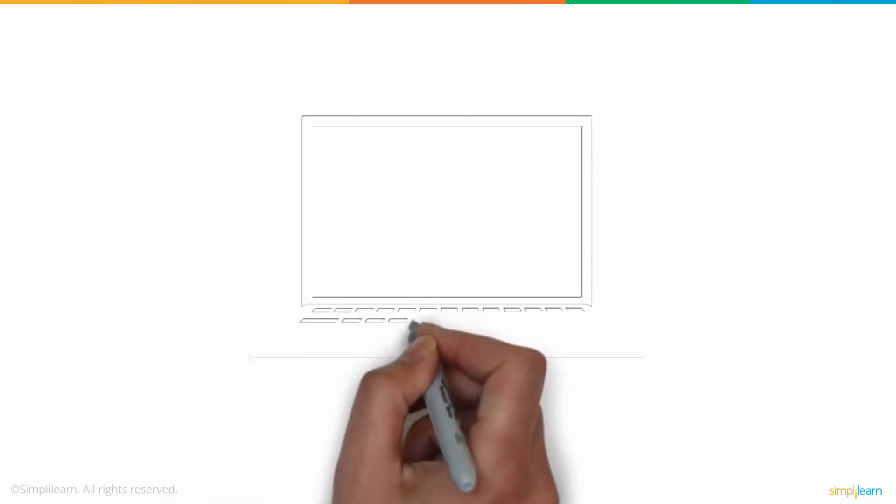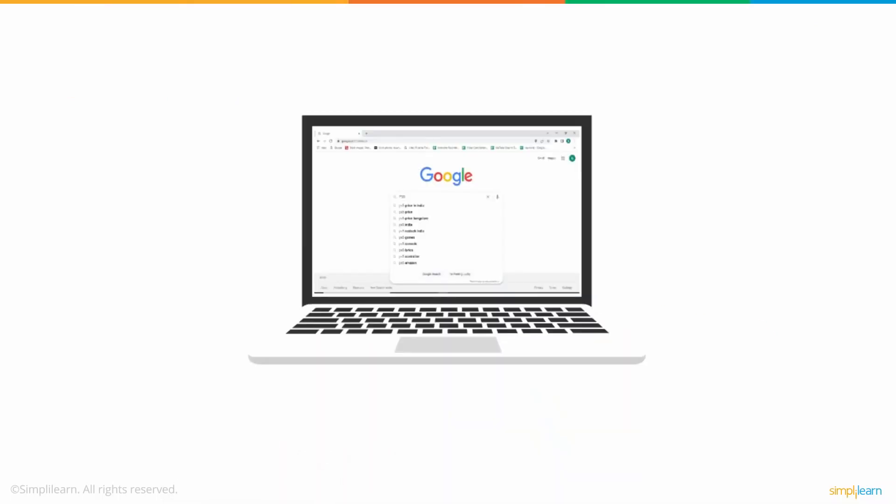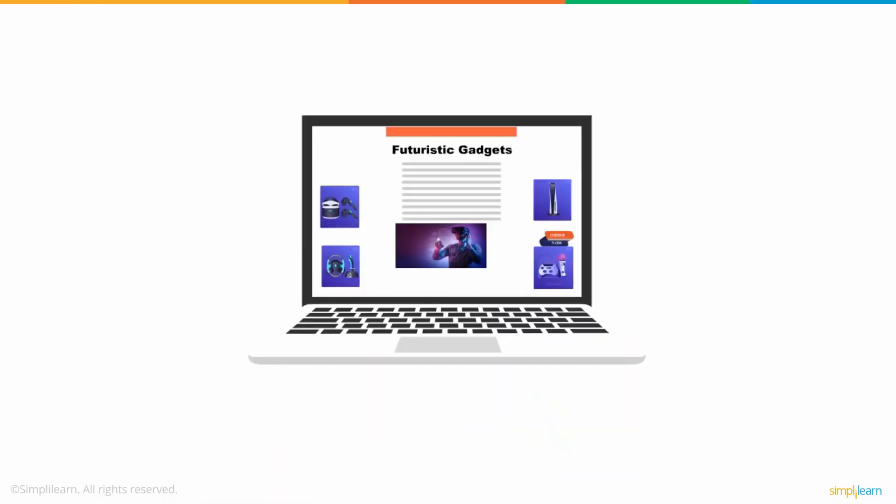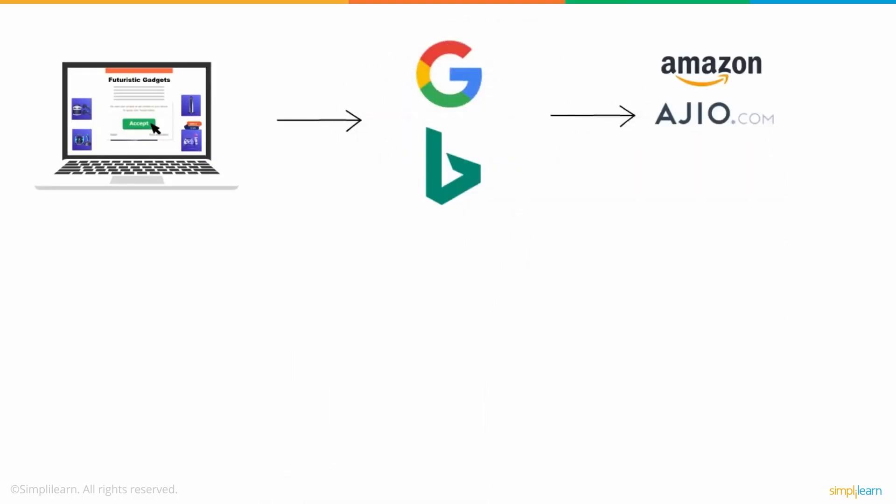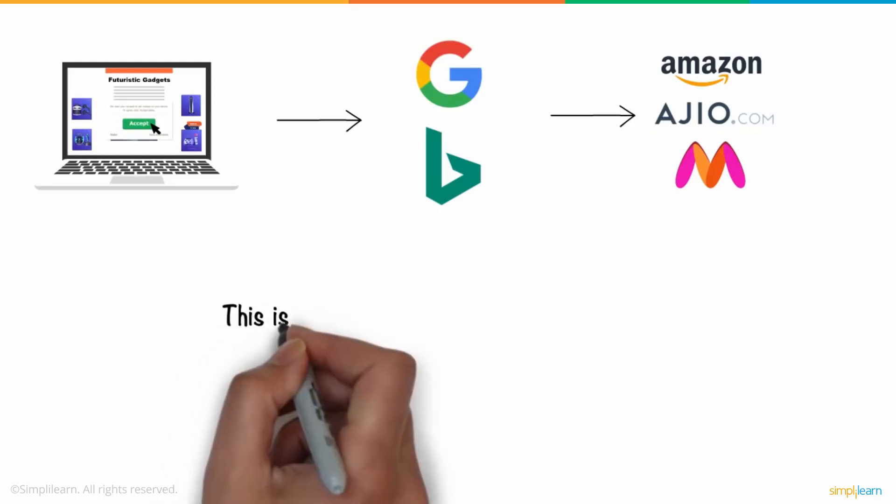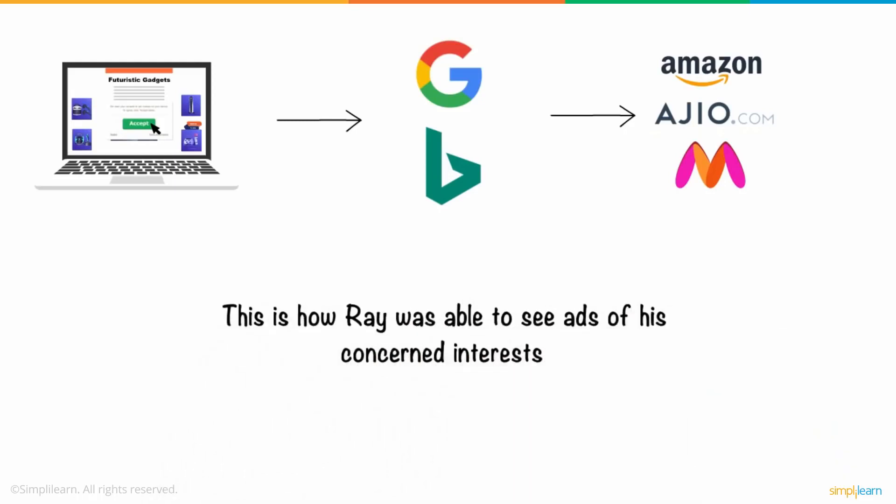He further added that when we seek out information or data of any kind from any web platforms present on the internet, simultaneously, unknowingly, we also provide them with information related to our choices and interests, which are stored in cookies, which later they sell to various companies who make use of this data to advertise exactly what you are looking for. And this is how Ray was able to see ads of his concerned interests.